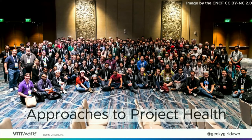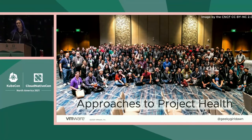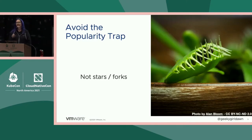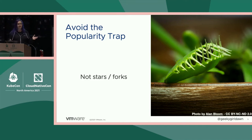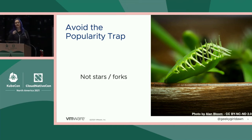Before we dive into the metrics, I wanted to talk about a few approaches to project health. I see a lot of people getting hung up on what I will call vanity metrics, or popularity metrics. I know it can be super exciting to hit big numbers for your projects — 100,000 stars or forks. While popularity measurements like stars and forks are interesting, they don't actually provide any real insight into project health, or indicate areas for improvement. So feel free to celebrate those milestones, but don't fall into the trap of thinking that they actually indicate anything meaningful about your project.